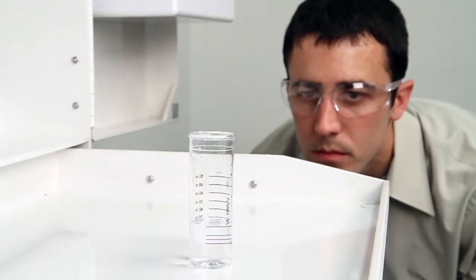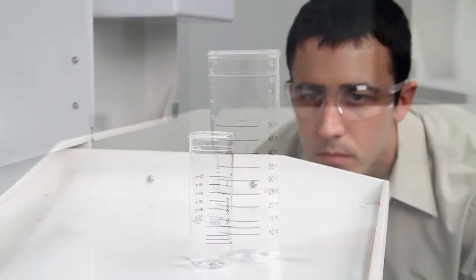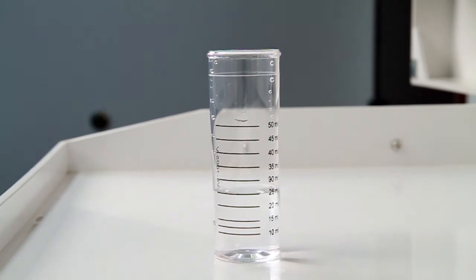When performing a drop count titration, a white background can provide contrast to better see the color changes. A cabinet tray or white paper towel can provide that contrast.